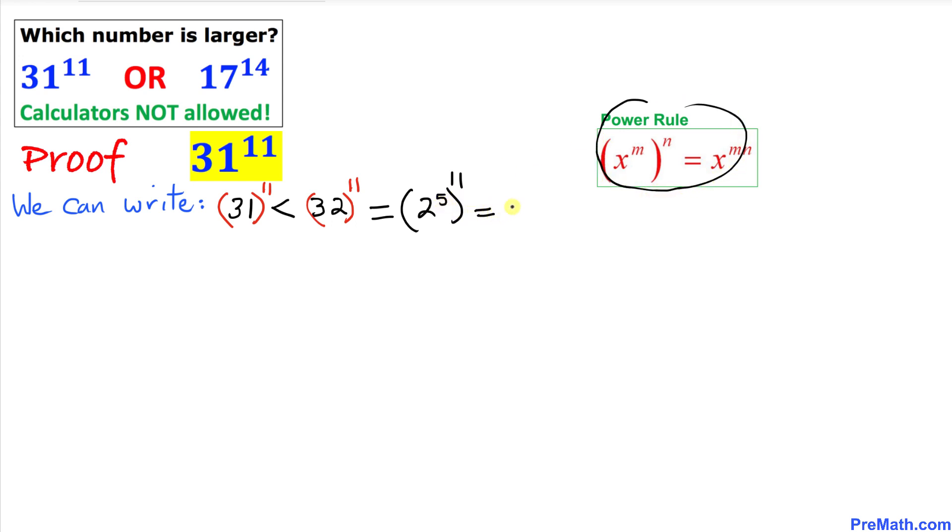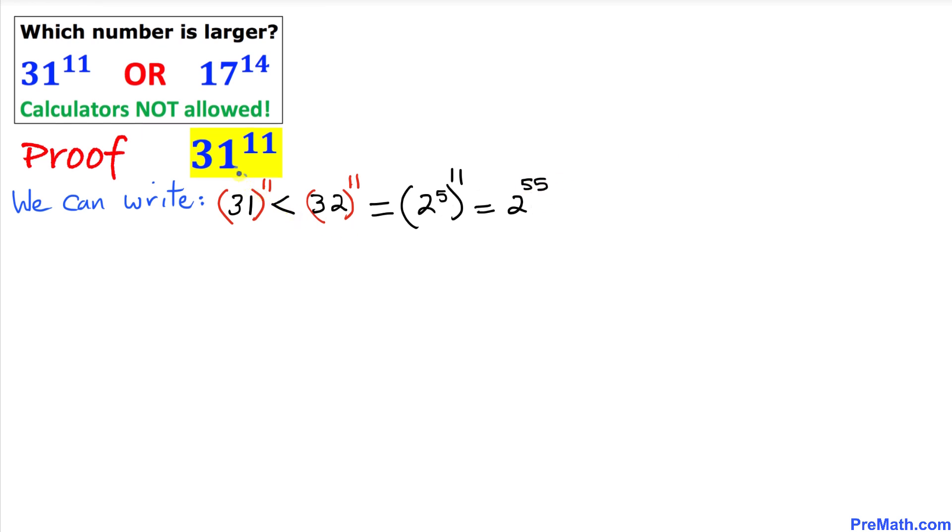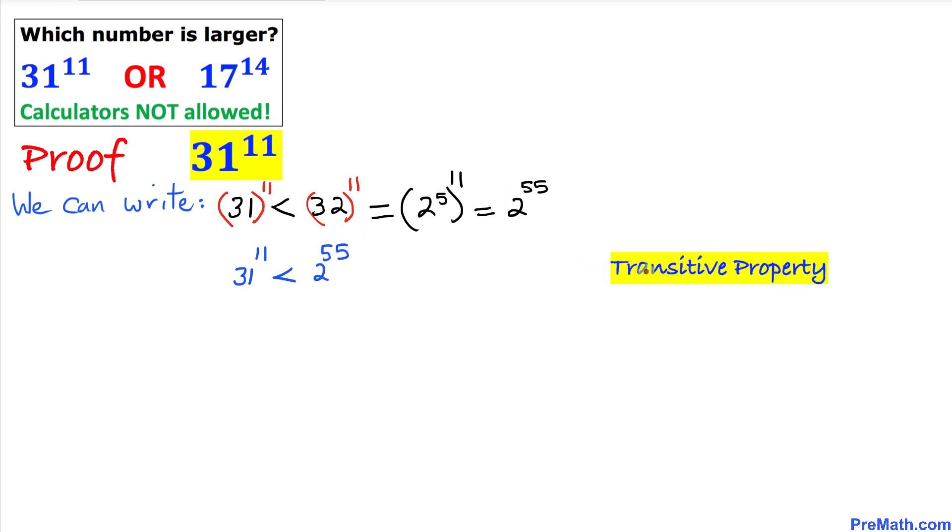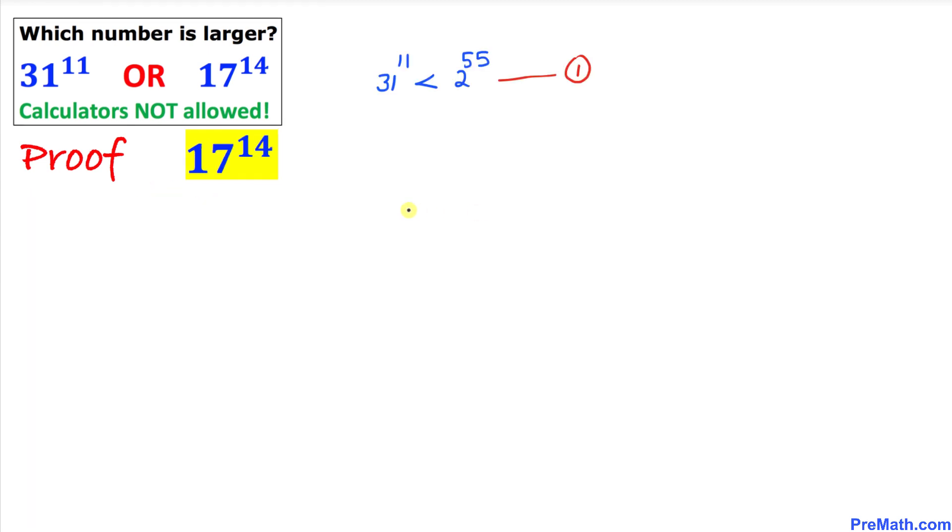We just multiply out these exponents, so this becomes 2^55. Thus we can write 31^11 is less than 2^55 according to transitive property. Let me go ahead and call this inequality number 1.